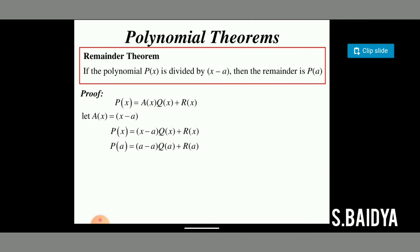So we are left with only the last term r(a). Therefore, p(a) = r(a). The theorem states that the remainder when p(x) is divided by x minus a is equal to p(a).